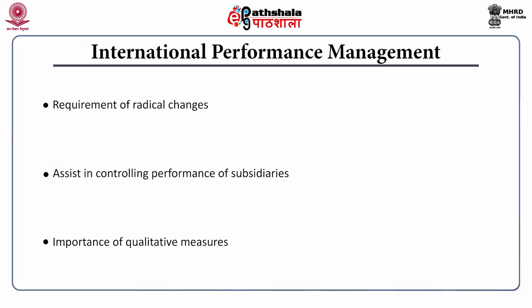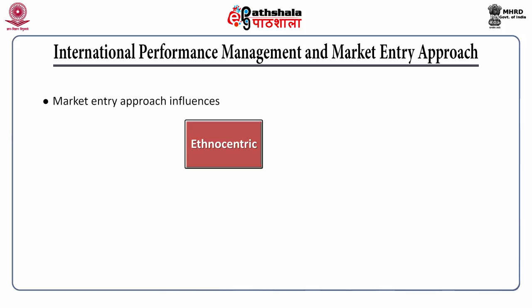Depending upon the approach of the organization to enter into the international market, the organization structure and human resource allocation varies from company to company. There exist four key approaches in this regard. An organization going for an ethnocentric approach holds all the key positions for people from the home country, either because home country human resources are in a better position to understand the requirements of the organization, or the host country lacks competent manpower. The approach stressing upon hiring people from the host country is known as the polycentric approach, under which host country people are hired to manage international subsidiary operations, while key positions at the parent country are still held by home country people.